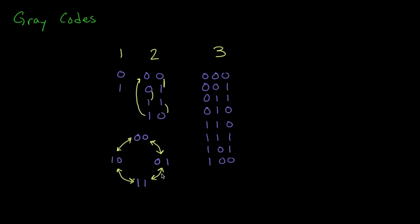The 3-bit example works the same, so we change only the rightmost bit here. In the second one we change the middle one, then we change the right one, and then we're going to change the leftmost one, then the right one, the middle one, and the right one again.